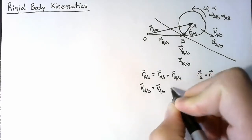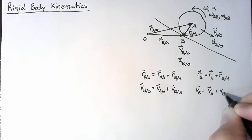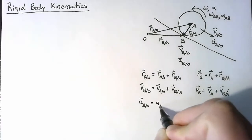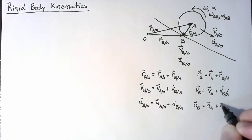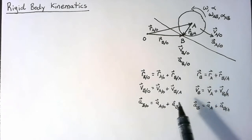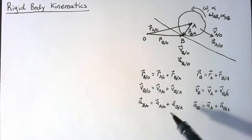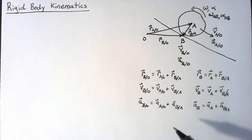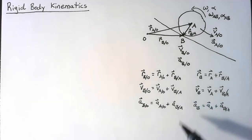We can differentiate these statements a couple of times to arrive at similar expressions for both velocity and acceleration. These expressions are correct but kind of obvious as they stand, so we want to spend some time thinking about how to write the velocity and acceleration of B with respect to A based on math we've already done.